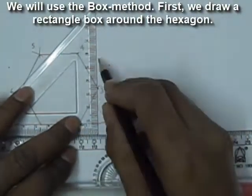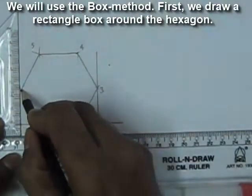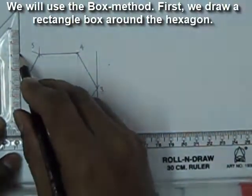Now this hexagon we will draw as isometric view. So we will use the box method. First we draw a rectangular box around the hexagon.